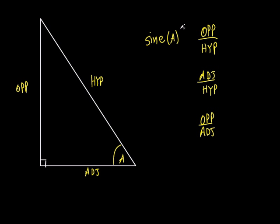Instead of always saying 'look at that right triangle and compare the opposite to the hypotenuse,' you just say 'look at the sine of angle A.' As soon as I say it's a right triangle and say 'look at the sine of angle A,' I'm telling somebody to make a ratio — a comparison between the opposite side and the hypotenuse. Put the opposite side on top and the hypotenuse on the bottom.